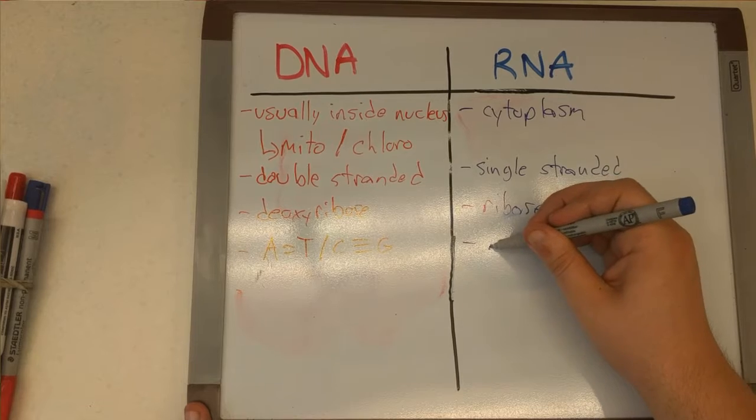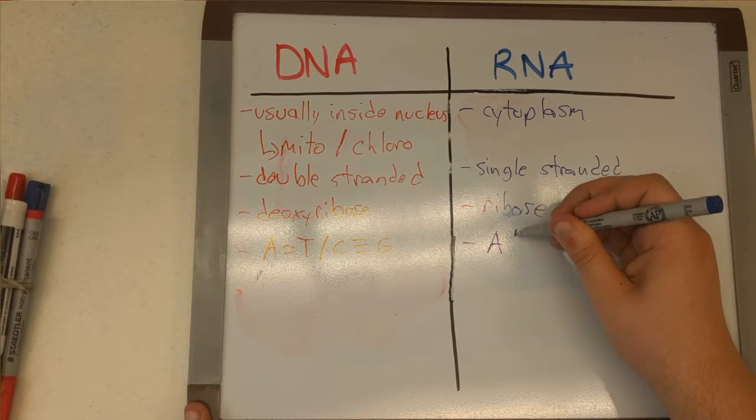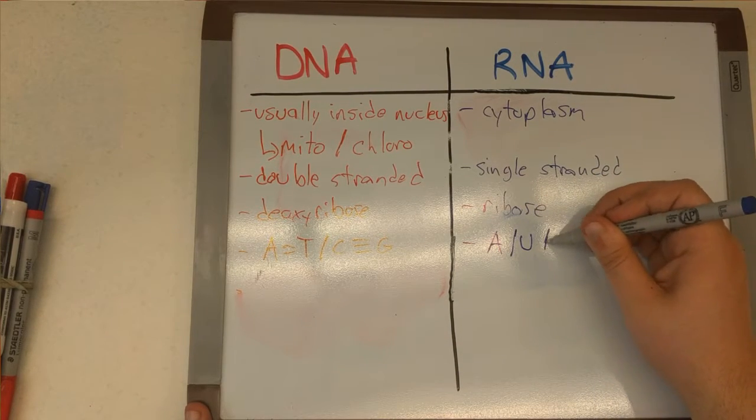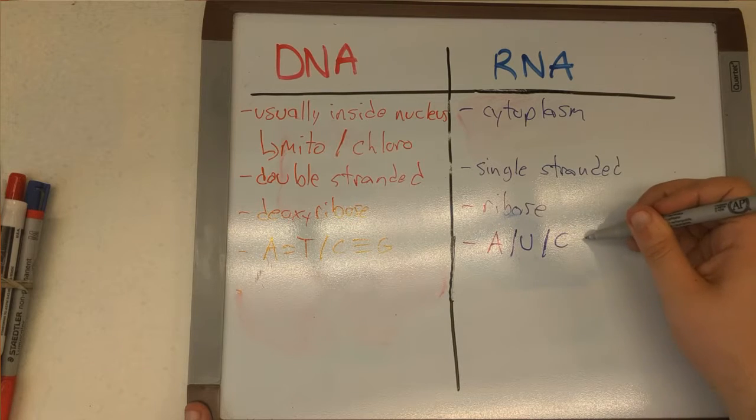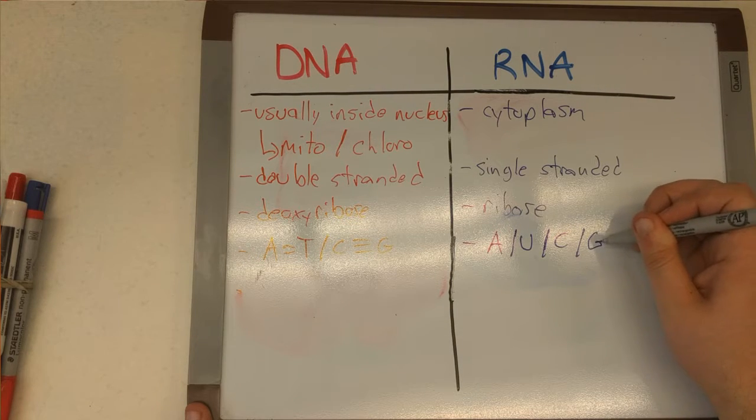And so because DNA is double-stranded, there's actually base pairing involved. So adenine and thymine will pair together with two hydrogen bonds, and cytosine and guanine pair together with three hydrogen bonds.